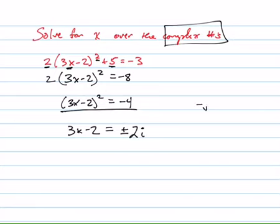And that's because the square root of negative 4 is equal to the square root of negative 1 times the square root of 4, and that's i and that's 2, right?